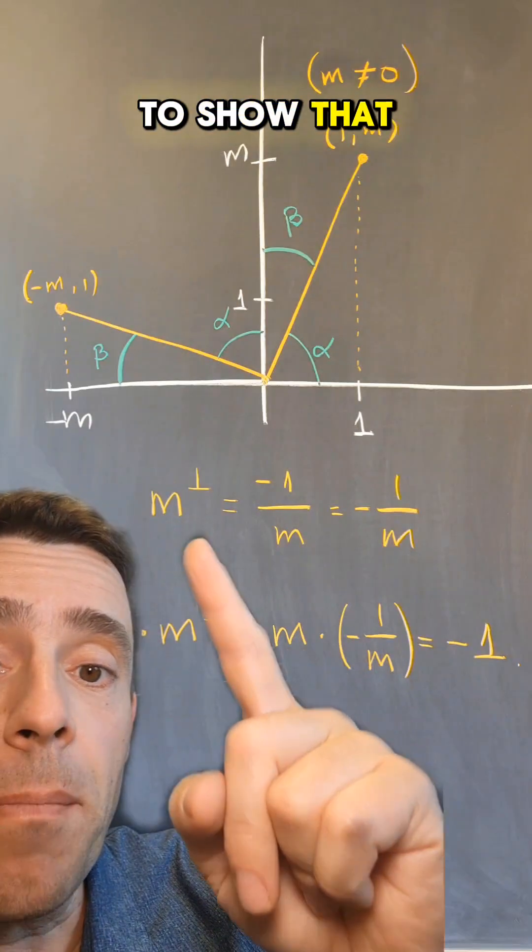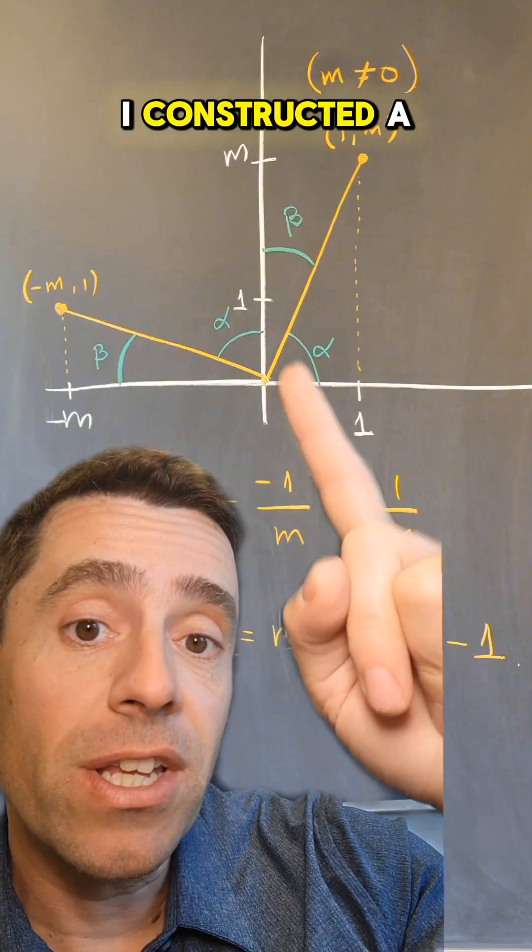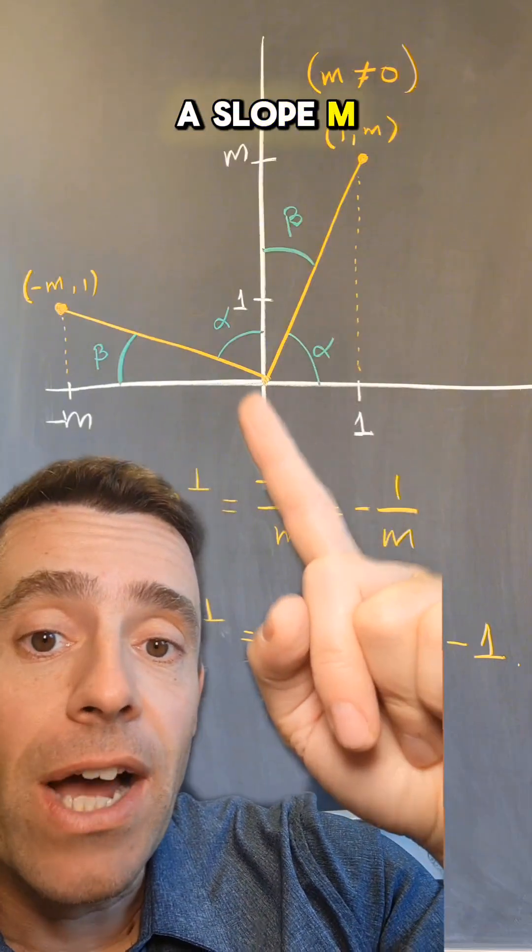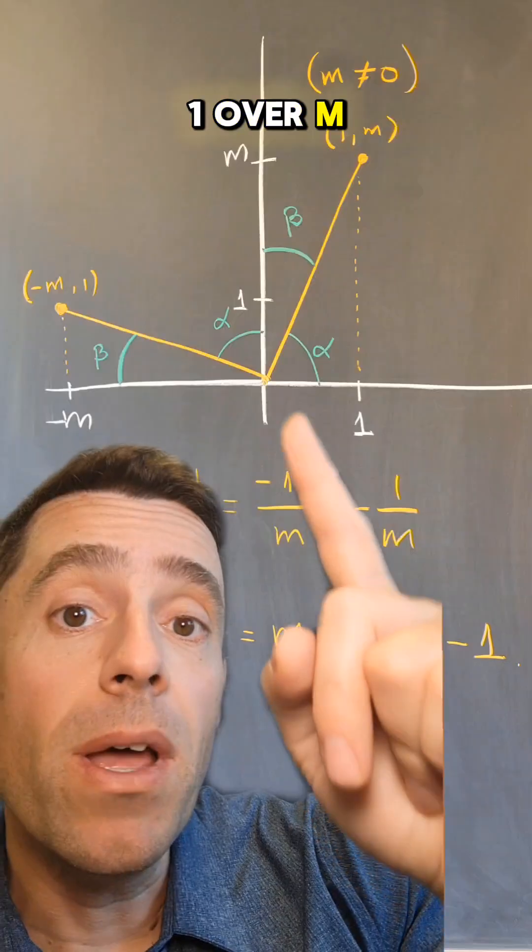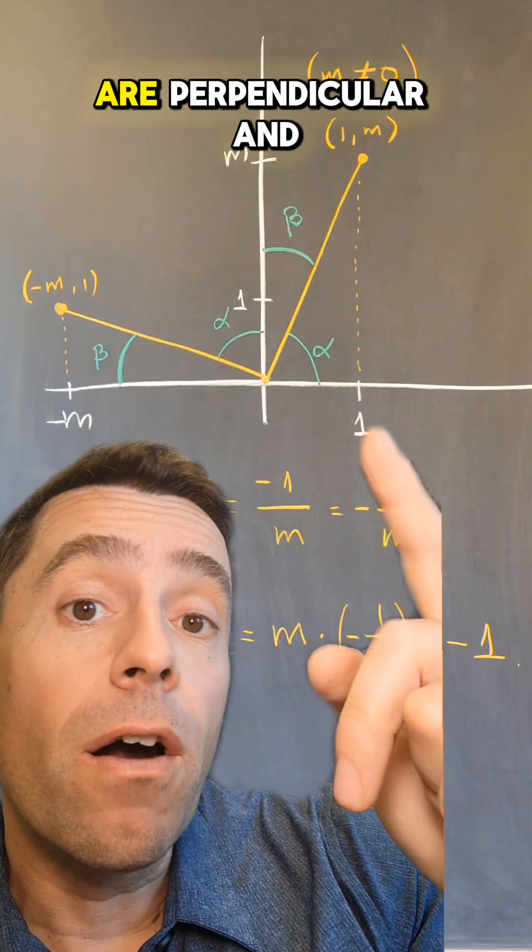What they mean is that to show that the perpendicular slope to m is minus 1 over m, I constructed a line that has a slope m, I constructed a line that has a slope minus 1 over m, and then I used angles to show that these two lines are perpendicular.